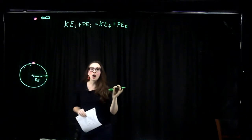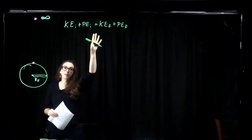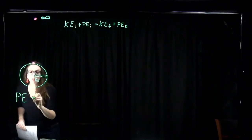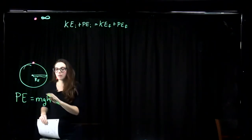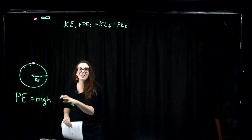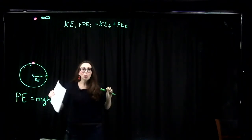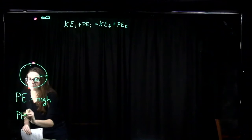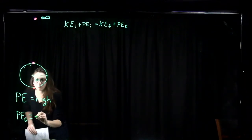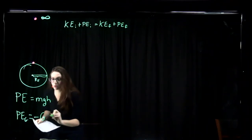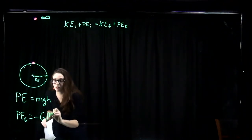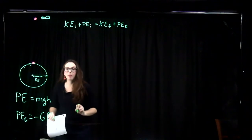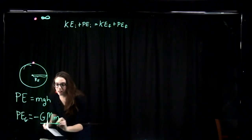Before we get started, I want to talk about the potential energy — in this case, the gravitational potential energy. We've been using gravitational potential energy equals mgh: mass of the object times acceleration due to gravity times height above the Earth's surface. But the full treatment of gravitational potential energy uses this equation: PE = negative big G times the mass of the large body (Earth) times the mass of the small object, divided by R.